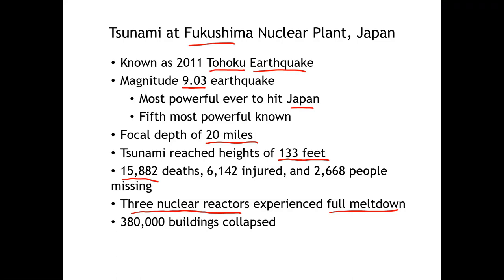Nuclear plants weren't just shut down in Japan, but all over the world. It caused hundreds of thousands of buildings to collapse. So even in a very developed, very prepared nation like Japan, you will still have a lot of damage from these strong earthquakes. It's something that Japan will always have to deal with, because they are located at a convergent plate boundary.